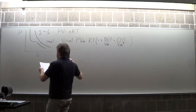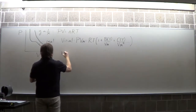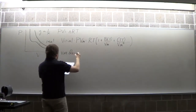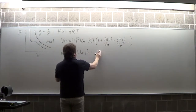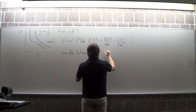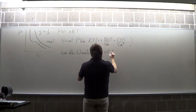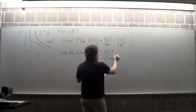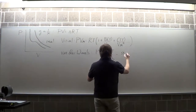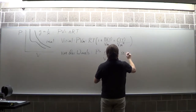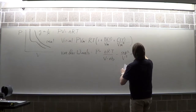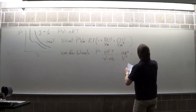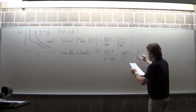I don't care too much about the virial, but the van der Waals equation is important. I tend to write it as VdW and write it out. It comes in two forms: the N form, where N explicitly appears, and the PM form, where I absorb the number of moles N into the volume.